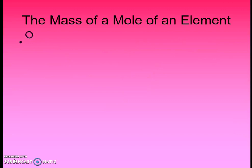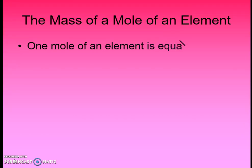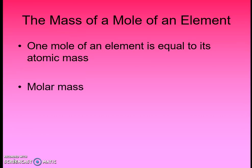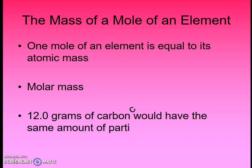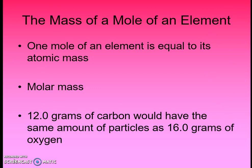Now let's look at how mass relates to moles. For any given element, the number of grams in a mole equals its atomic mass. Hydrogen has an atomic mass of 1, so for every 1 gram of hydrogen, there are 6.02 times 10 to the 23rd atoms of hydrogen — that's called the molar mass, the mass of one mole. This works for every element on the periodic table: its atomic mass equals its molar mass. Comparing 12 grams of carbon to 16 grams of oxygen, since those are their molar masses, both contain 1 mole — 6.02 times 10 to the 23rd atoms — meaning 12 grams of carbon and 16 grams of oxygen contain the same number of particles.